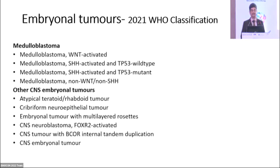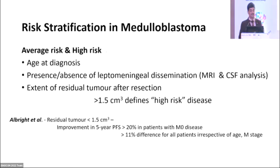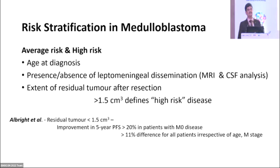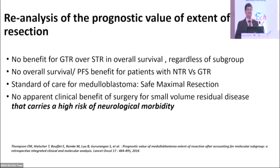There are newer entities like cribriform neuroepithelial tumor, which we have never heard or seen — maybe we'll be seeing them soon. Conventionally, we know that medulloblastoma is a surgical disease. The better the resection, the better the outcome. From Albright's article, residual disease less than 1.5 cubic centimeters translates into better functional and oncological outcome — this has been known for the past two decades.